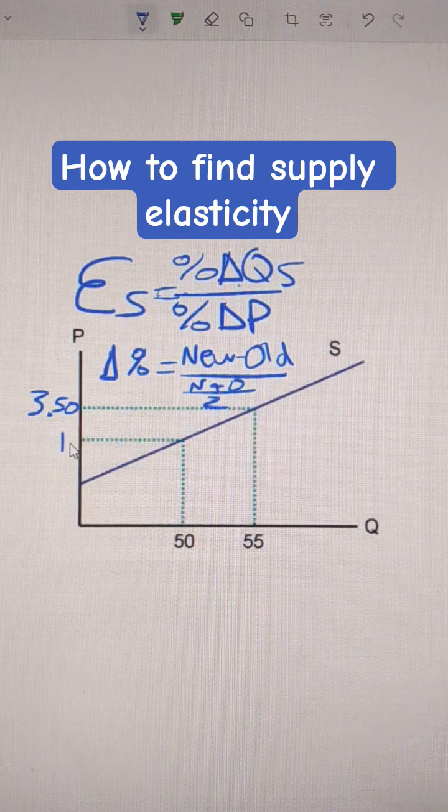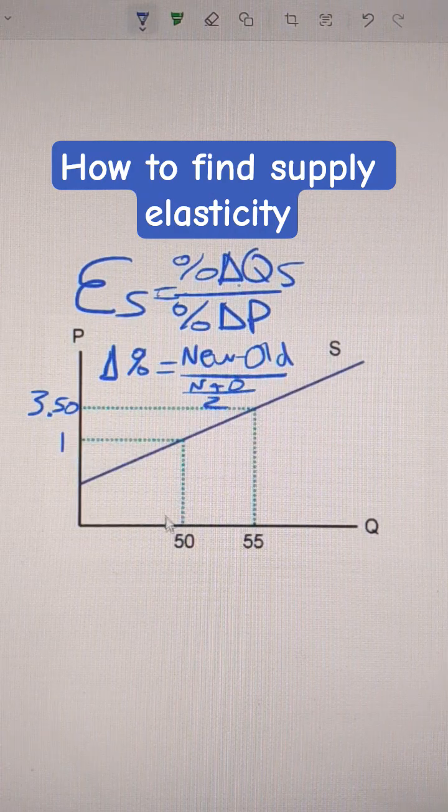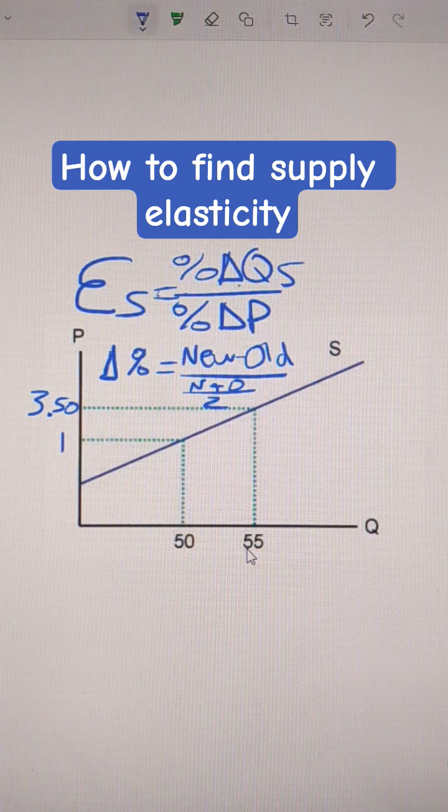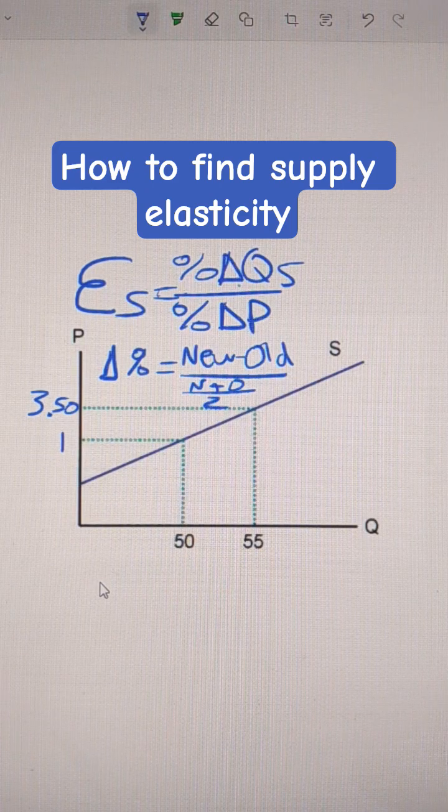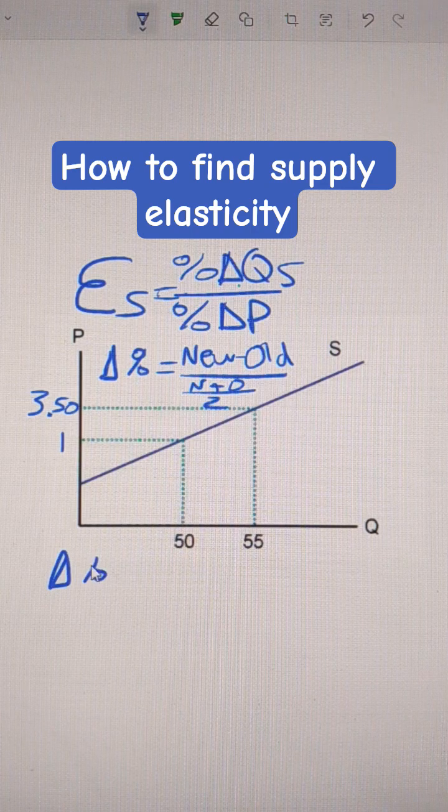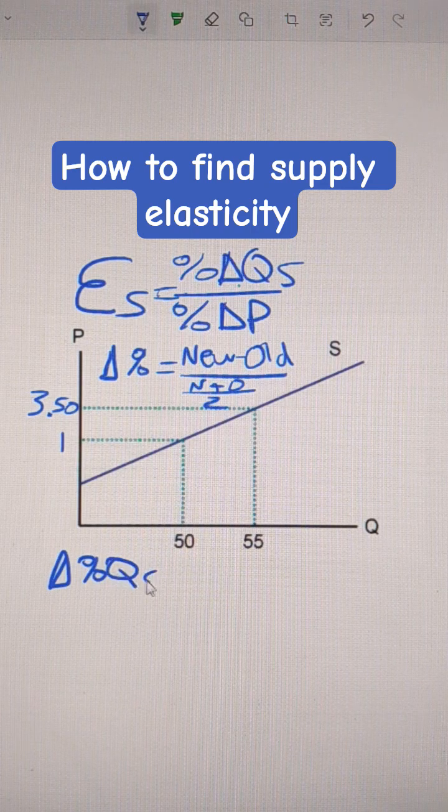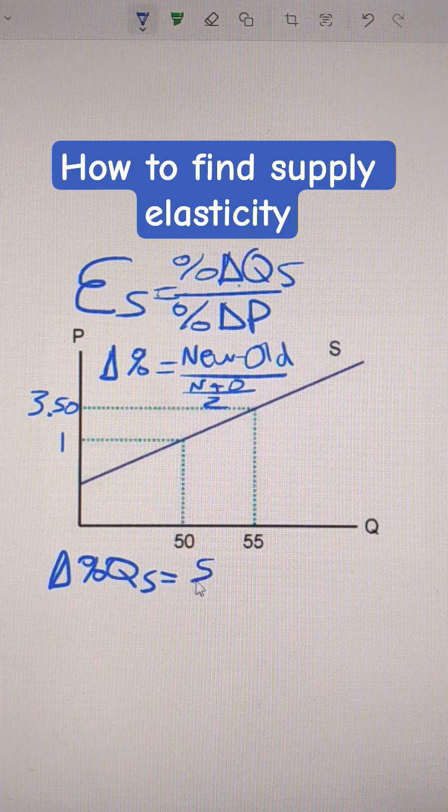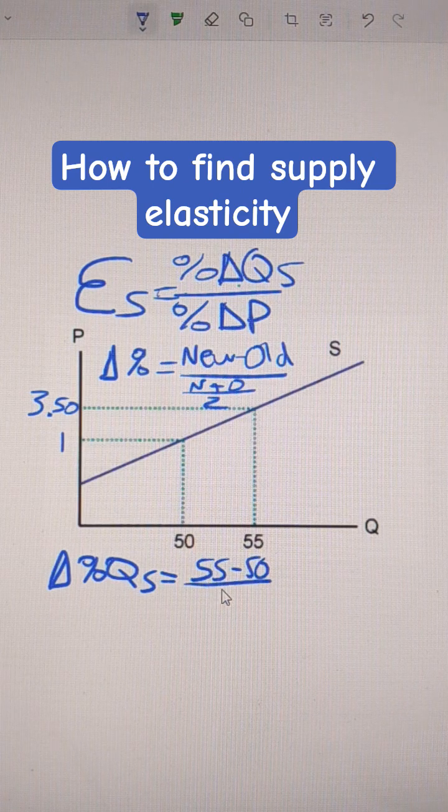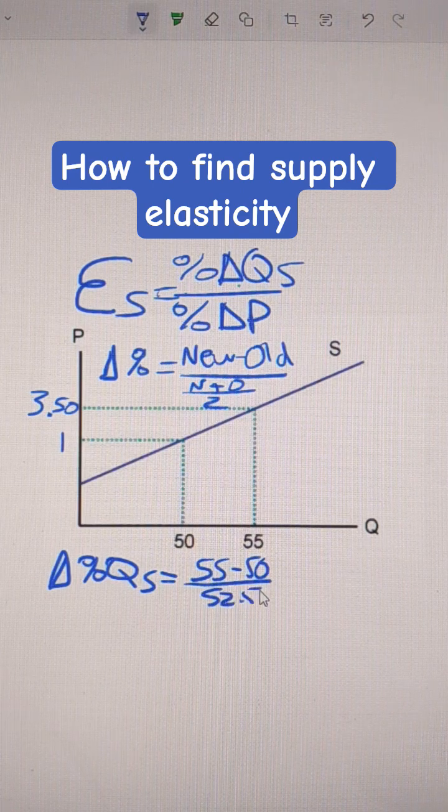So, let's do this problem here. We're going from $1 to $3.50. We can see a change from quantity 50 to quantity 55. So, the change as a percent in quantity supplied is 55, which is the new number, minus 50, divided by 52.5.